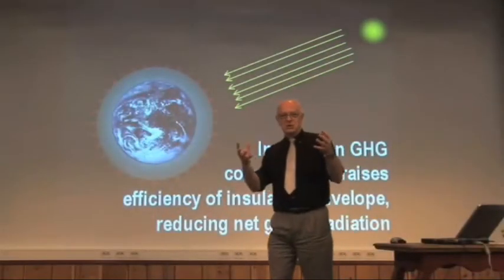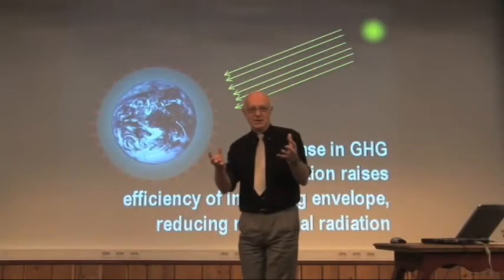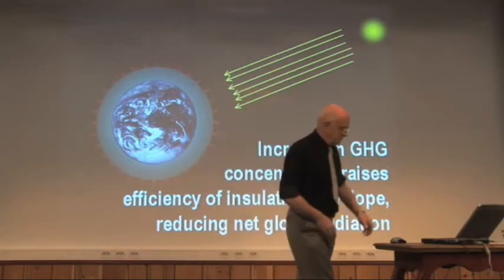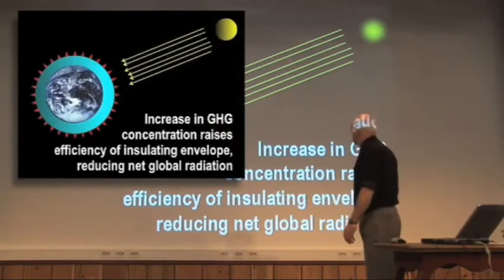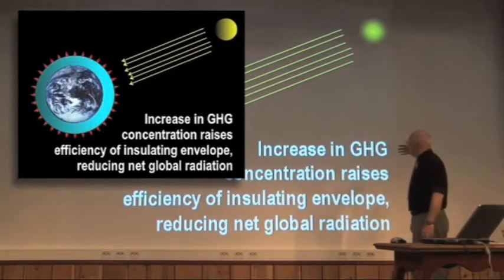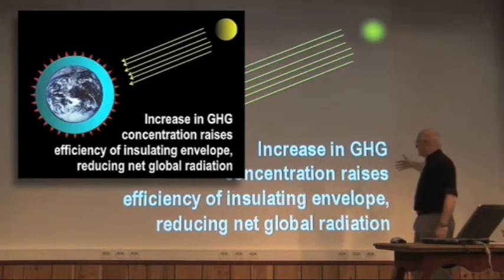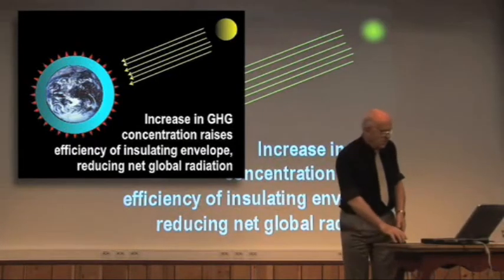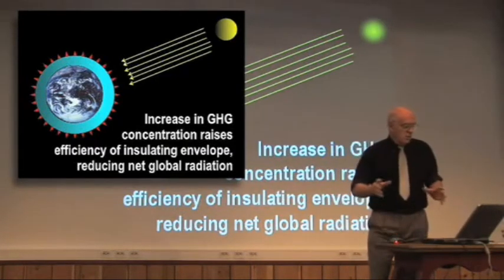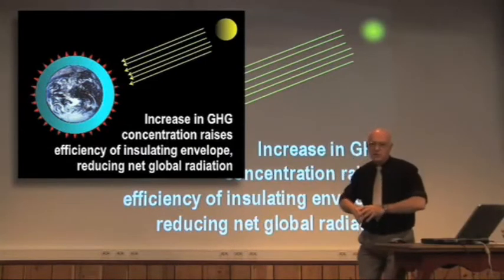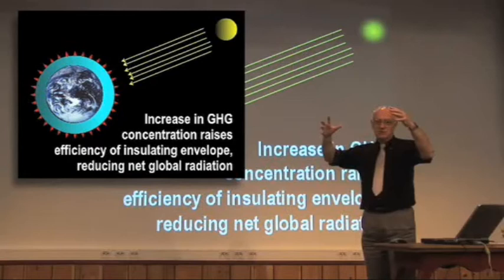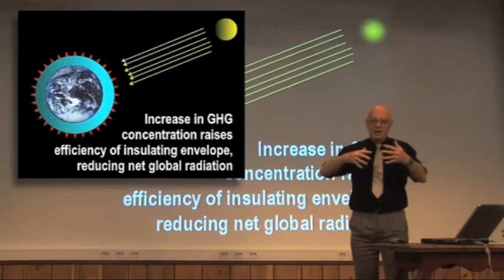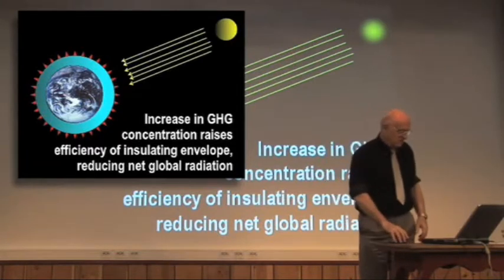I want you to think global, to treat the Earth as a whole in its relationship to its environment and space. We know that increase in the concentrations of greenhouse gases raises the efficiency of the insulating envelope and reduces the net global radiation. Those red arrows pointing out show the radiation we give out into space from the Earth, which just balances the radiation we receive from the Sun — and that balance is what maintains the conditions for life.